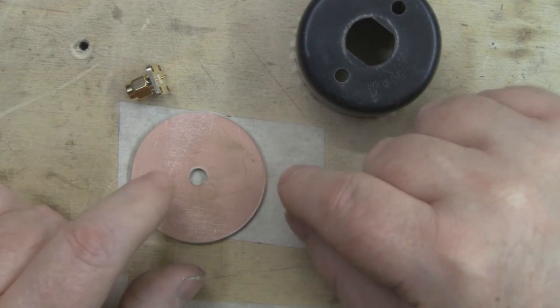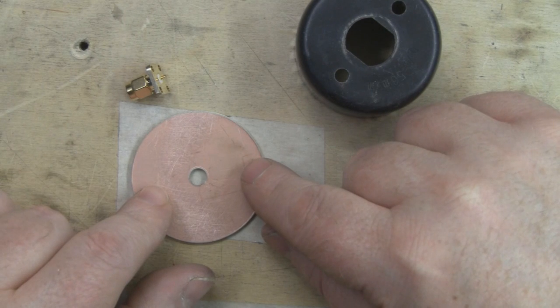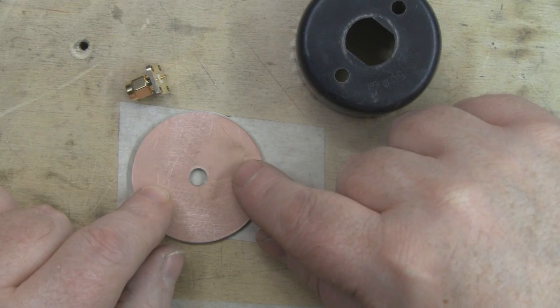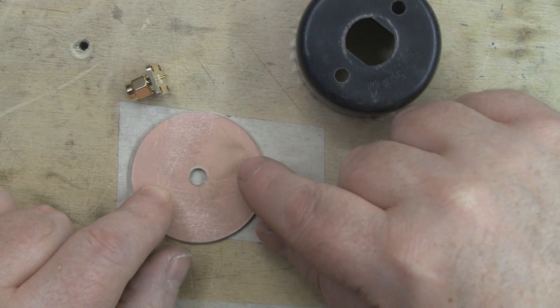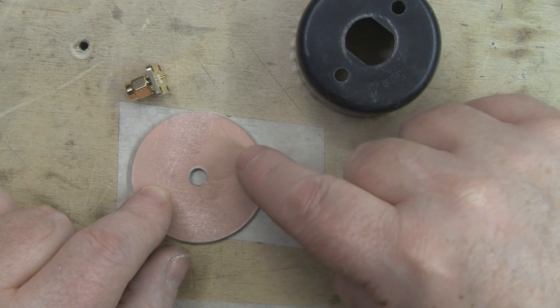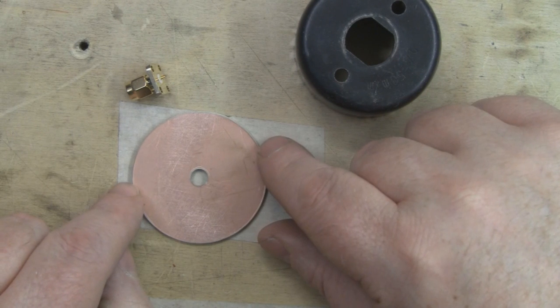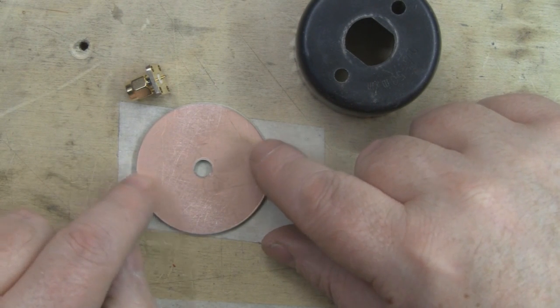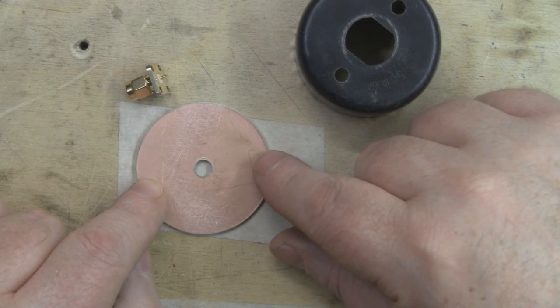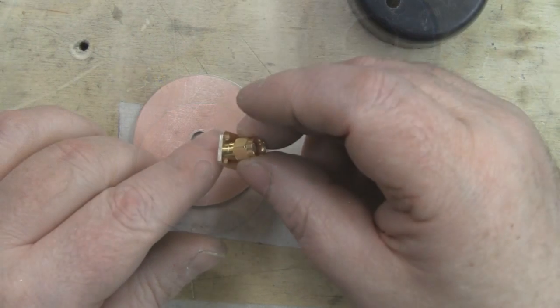The back reflector for a helical antenna for 2.4 GHz needs to be at least one wavelength square. A 50mm diameter round disc of copper will be plenty big enough for our reflector.